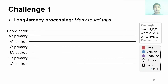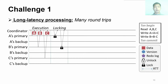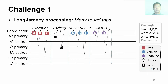The first challenge is long latency processing, which causes many round trips. In general, there are five phases to process a distributed transaction when using OCC and primary-backup replication. First, a coordinator reads the required data from primaries and locally executes a transaction. Second, the coordinator locks the write set in primaries to serialize the transaction. Third, the coordinator reads the data versions from primaries to validate that the versions are unchanged. Fourth, the coordinator sends the redo logs to remote backups. Finally, after receiving all ACKs from backups, the coordinator updates and unlocks the primaries to commit the transaction.